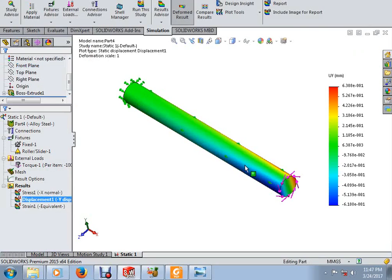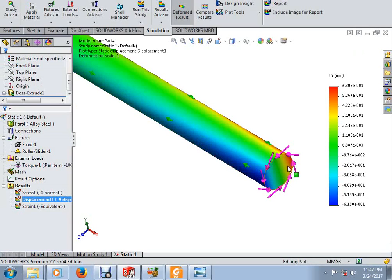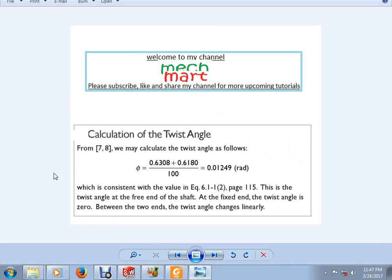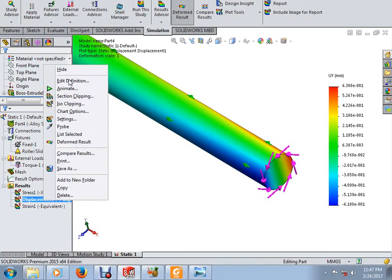So, twist angle can be calculated by just doing the maximum and minimum displacement at extreme edges, at this point, at this point. A simple formula is that the twist angle will be calculated by adding the displacement and divided by 100. Edit definition again.